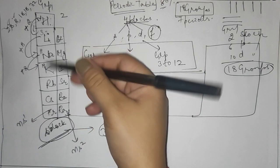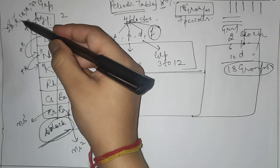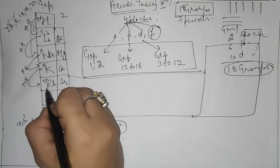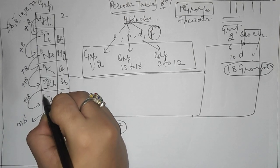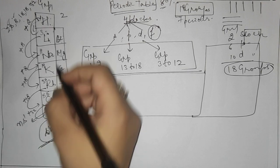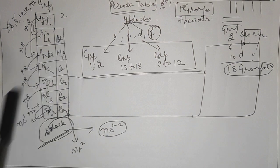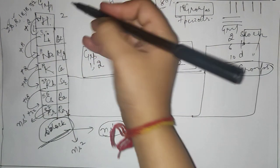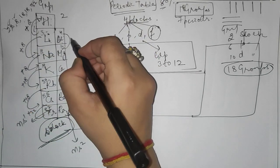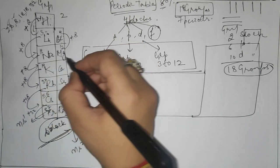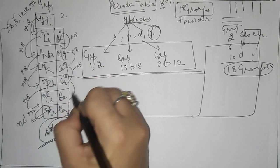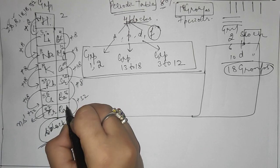Continuing group 1: 19 + 18 = 37 (rubidium); 37 + 18 = 55 (cesium); 55 + 32 = 87 (francium). The same approach applies to group 2: beryllium is 4 (3 + 1), magnesium is 12 (4 + 8), calcium is 20 (12 + 8), strontium is 38 (20 + 18), barium is 56 (38 + 18), and radium is 88 (56 + 32).